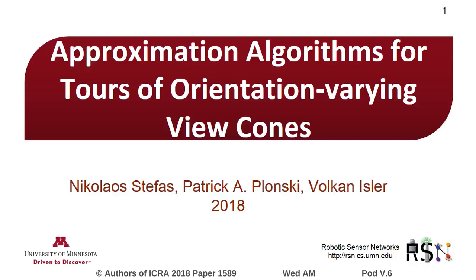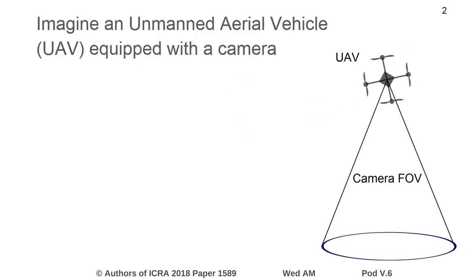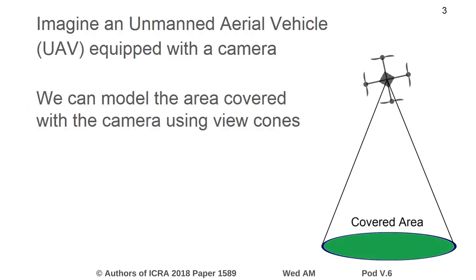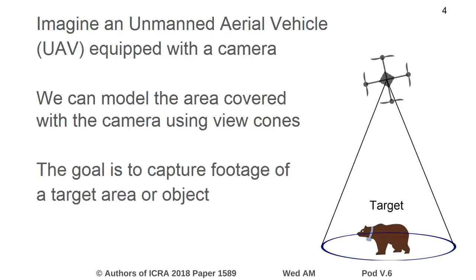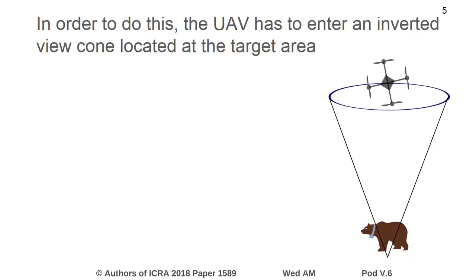This is the presentation for approximation algorithms for tours of orientation varying viewcones. Imagine an unmanned aerial vehicle or UAV equipped with a camera. We can model the area covered with a camera using viewcones, and our goal is to capture footage of a target area or object. In order to do this, the UAV has to enter an inverted viewcone located at the target area.